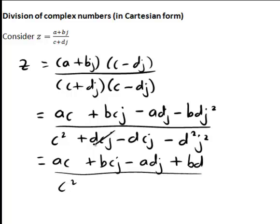Looking at the denominator, we have a dcj and a minus dcj, so those just give 0. And again, minus d squared j squared will become minus d squared times negative 1, giving plus d squared, which has eliminated j from the denominator as required.